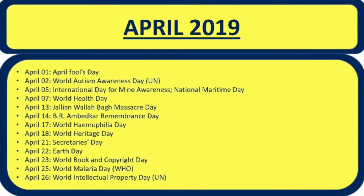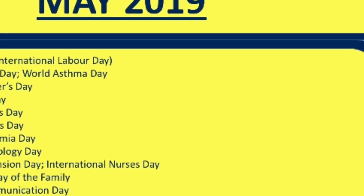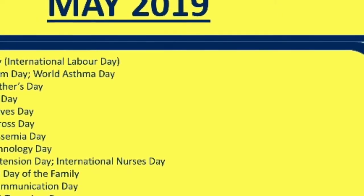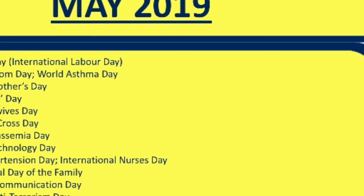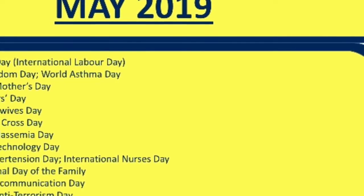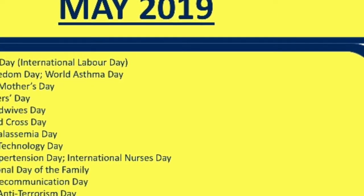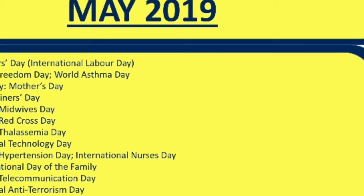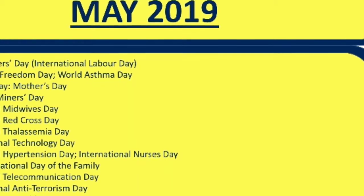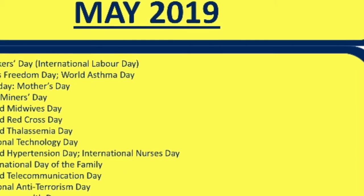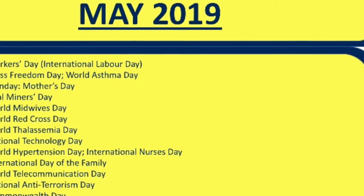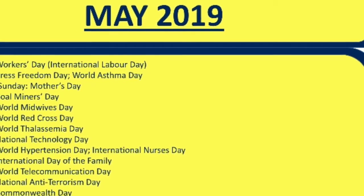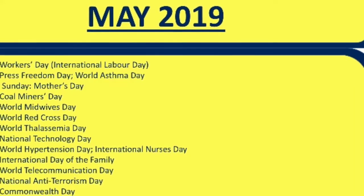Next comes May 2019. 1st May: Workers' Day / International Labour Day — remember this properly. 3rd May: Press Freedom Day and World Asthma Day. May 2nd Sunday: Mother's Day. 4th May: Coal Miners Day. 5th May: World Midwives Day. 8th May: World Red Cross Day — this is important. 9th May: World Thalassemia Day.